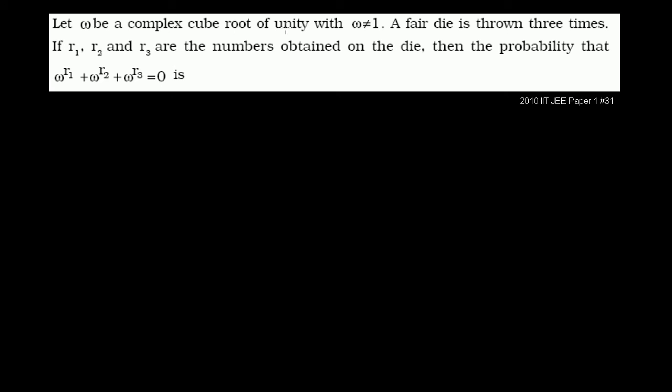Let omega be a complex cube root of unity with omega not equal to 1. A fair die is thrown three times. If r1, r2, and r3 are the numbers obtained on the die, then the probability that omega to the r1 plus omega to the r2 plus omega to the r3 equals 0 is a fascinating problem.